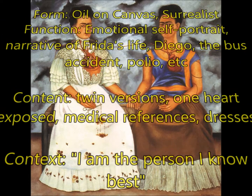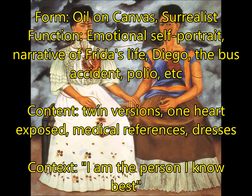Next up, we're going to have The Two Fridas by Frida Kahlo. This is an oil on canvas, and it is a surrealist painting. For function, this is an emotional or psychological self-portrait — a narrative or story about Frida's life. It's about Diego Rivera and the bus accident she was in, which landed her in the hospital and resulted in many surgeries, and also polio that damaged her leg. For content, this shows twins of Frida: the one on the left has the heart exposed and is more vulnerable, wearing a wedding dress; the one on the right has her heart more closed off. The medical references come from her time spent in the hospital — she knew a lot about anatomy.